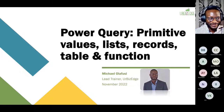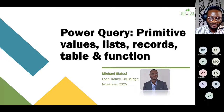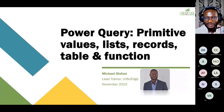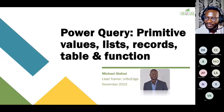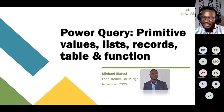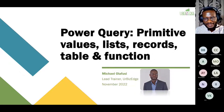Today I'm going to show you things that you hopefully find useful, but at least different. I'm going to take us through literal values — what I'm calling primitive values — looking at lists, records, everything primitive. So: literal values, list, records, table, and function.